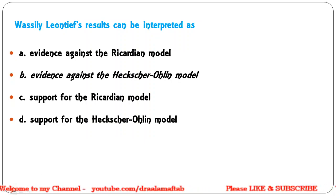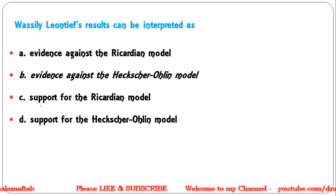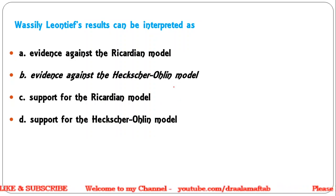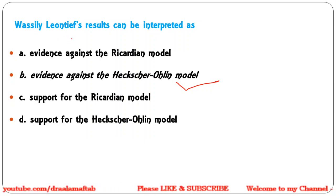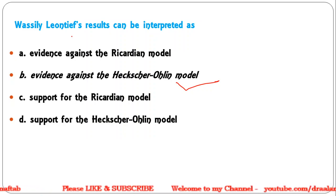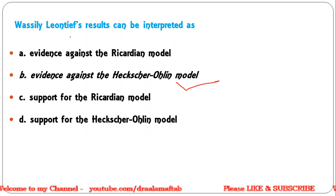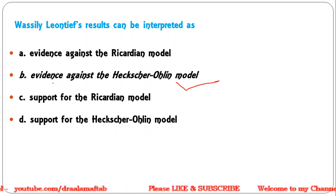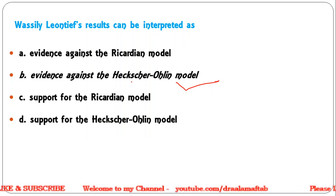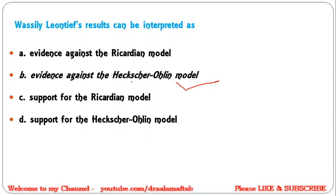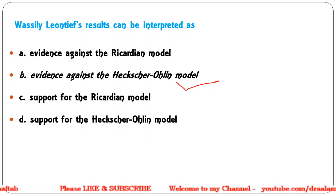Next: Wesley Leontief's results can be interpreted as — evidence against the Ricardian model; evidence against the Heckscher-Ohlin model; support for the Ricardian model; support for the Heckscher-Ohlin model. Correct answer is B — evidence against the Heckscher-Ohlin model. Leontief used input-output data from America and found that America was both exporting and importing capital-intensive goods, which contradicts the H-O prediction that a capital-intensive country should specialize in capital-intensive exports.